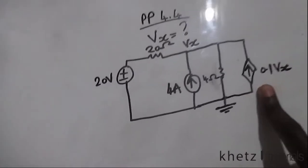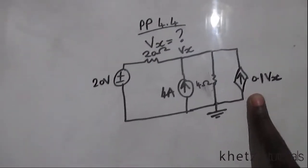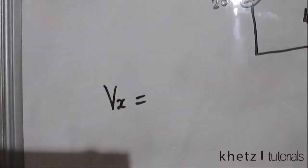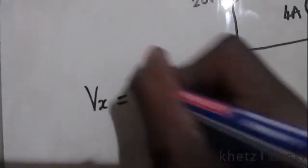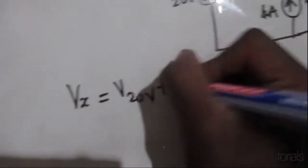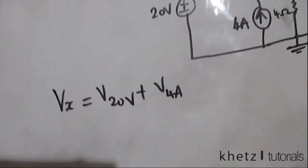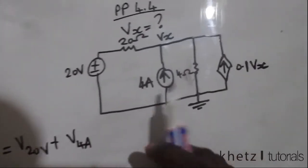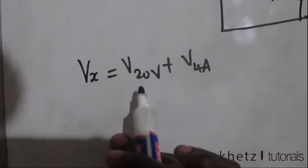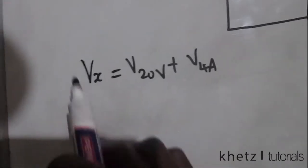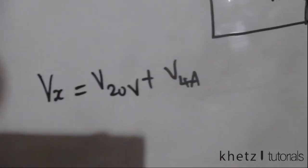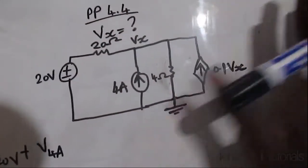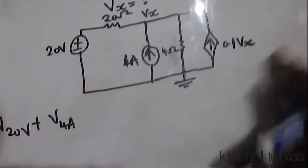We are going to start by finding the contribution using superposition. Vx equals the algebraic sum of the contributions of all the independent sources. The independent sources in this case are the 20-volt voltage source and the 4-ampere current source. Adding those contributions together gives us Vx — that is what superposition is about.